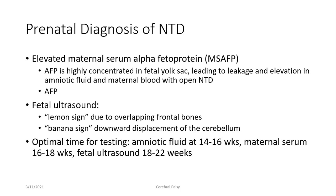The prenatal diagnosis of neural tube defects is through elevated maternal serum alpha-fetoprotein. Alpha-fetoprotein is highly concentrated in the fetal yolk sac, and in cases of open neural tube defects, leakage into the amniotic fluid can be detected. This is combined with fetal ultrasound, which has specific findings indicative of neural tube defects. Optimally, amniotic fluid testing is performed at 14 to 16 weeks, or maternal serum at 16 to 18 weeks, in combination with fetal ultrasound around 18 to 22 weeks of gestation.